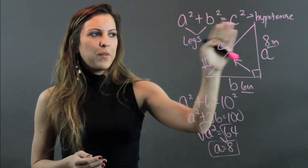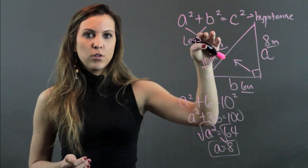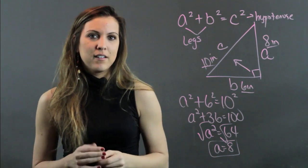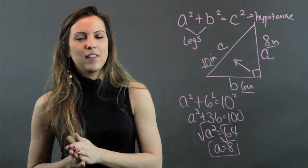So write your Pythagorean theorem, label your right triangle correctly, substitute correctly, and then simplify and don't forget to take the square root at the end. My name is Maria and I just showed you how to use the Pythagorean theorem.